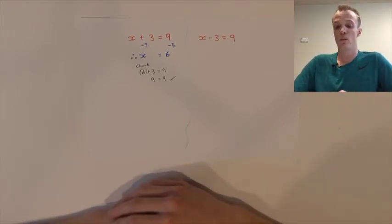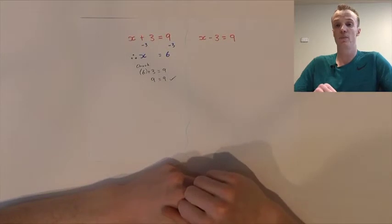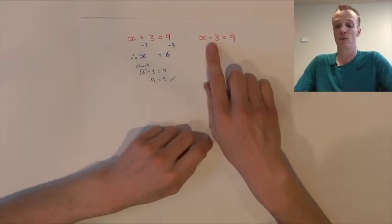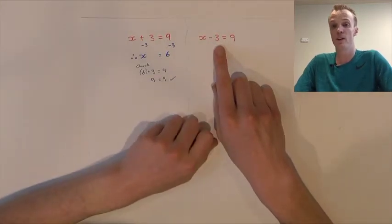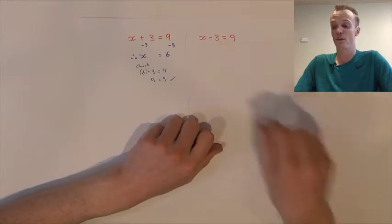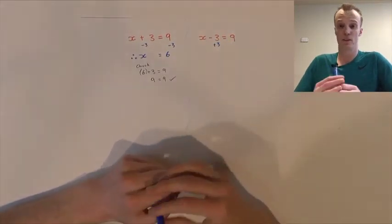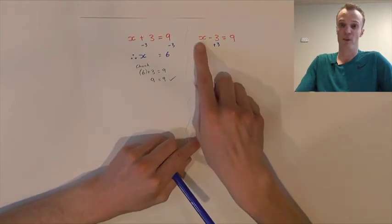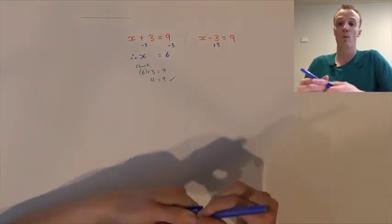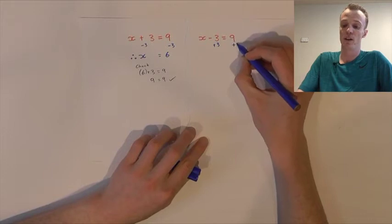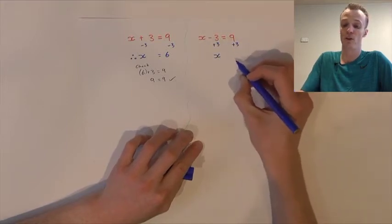On the right-hand side we have the problem x subtract 3 equals 9. Like before, our goal is to get the pronumeral x on its own, so we need to remove the subtract 3. The inverse of subtraction is addition. If we add 3 to the left-hand side, negative 3 plus 3 is 0, so they'll cancel out and leave just our pronumeral on the left-hand side. However, whatever we do to one side, we must do to the other.